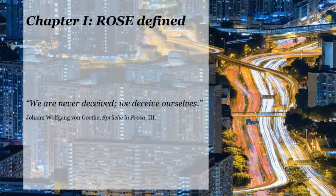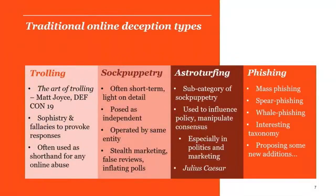So, ROSE defined. It's worth looking at traditional online deception types. Starting from the left: trolling — Matt Joyce gave a brilliant talk on this at DEF CON a few years ago about sophistry and logical fallacies. Then sock puppetry and astroturfing, which is the creation of lightweight short-term profiles to give weight to some position, whether marketing or political. And then there's phishing — mass phishing, spear phishing, whale phishing.